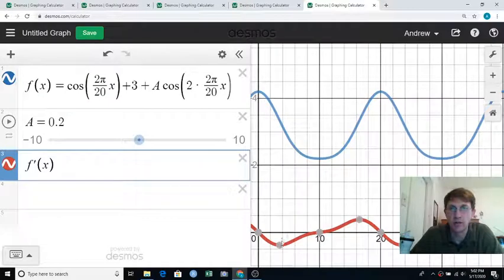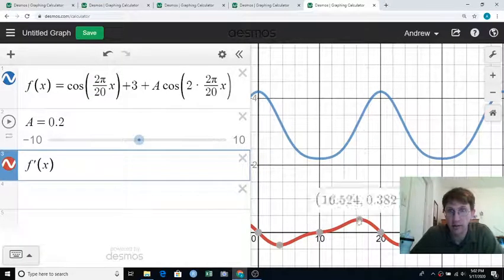f prime being increasing is a way of saying concave up. It's not our book's definition. So since Desmos has highlighted the min here and the max there, and the function is increasing all the way between those, f itself is concave up from here to there.